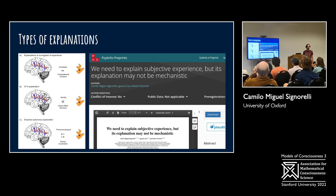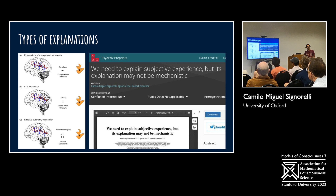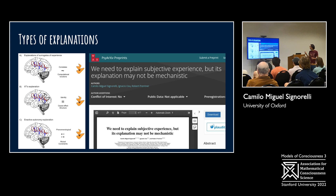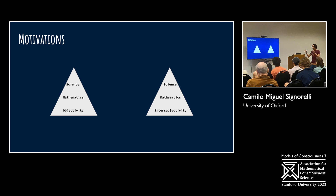We also engage with types of explanations. It's very important to understand what types of explanations models try to focus on or find satisfactory. We have a recent preprint where we do a critical review of certain concepts in IIT. But more broadly, the idea comes from Francesco Lillo's paper about misplaced objectivity. We agree with that direction, and we want to push it further - we need to explain subjective experience, but perhaps this explanation is not mechanistic. That's connected to mathematics and constraint-based types of explanations.